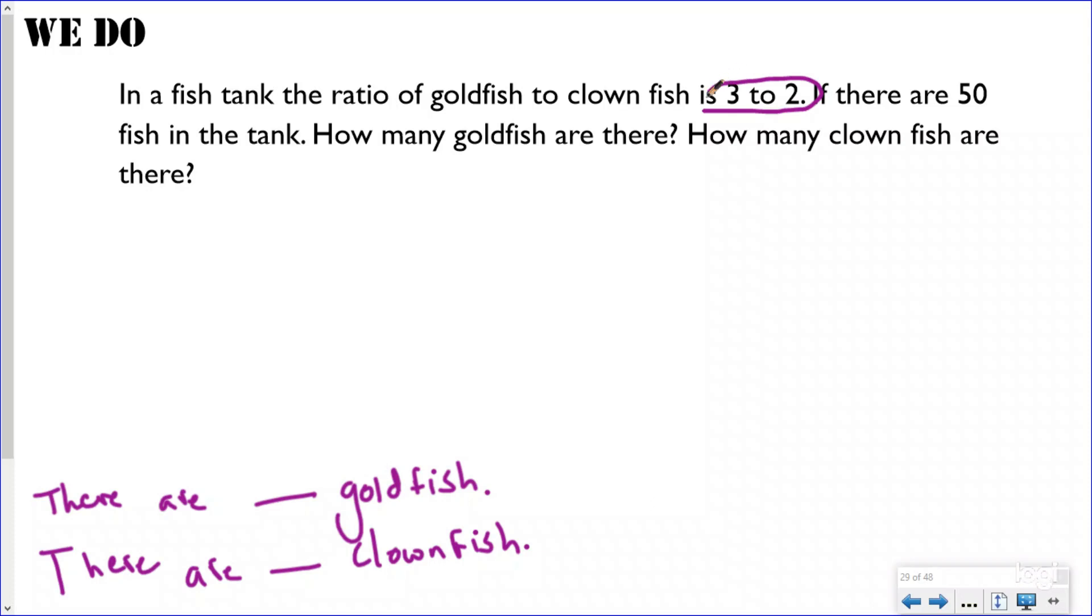It told me right here, here's my ratio. This is the same exact problem, so we're gonna draw the same tape diagram. But now we know that there are 50 fish in the tank. I'm gonna have three equal groups here and two clownfish here, so I have three equal groups of goldfish and two equal groups of clownfish.